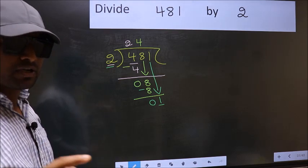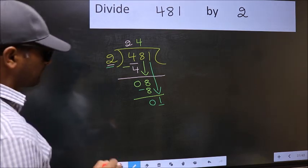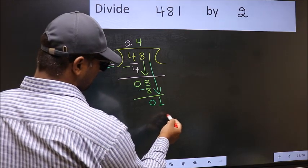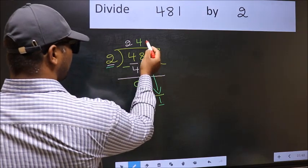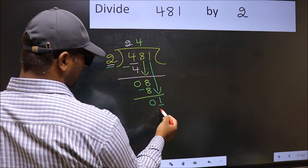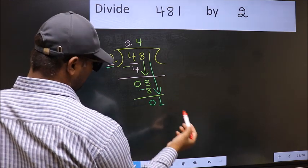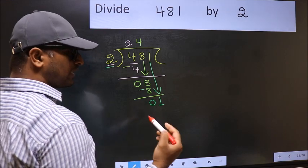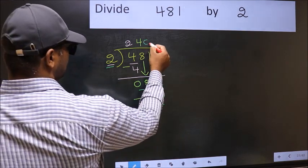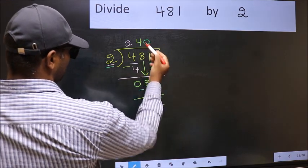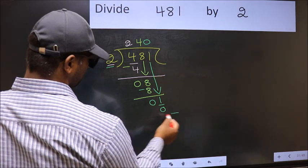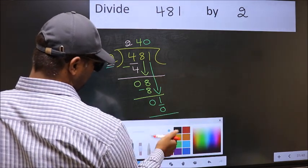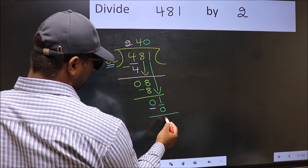Instead, what you should think is: what number should we write here? If I take 1, I get 2 here. But 2 is larger than 1. So what we do is put 0 here. So 2 into 0 is 0. Now you subtract: 1 minus 0 equals 1.